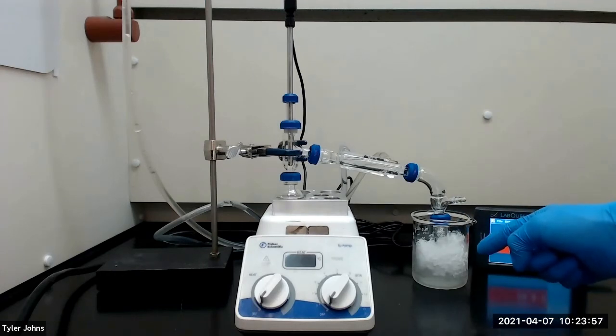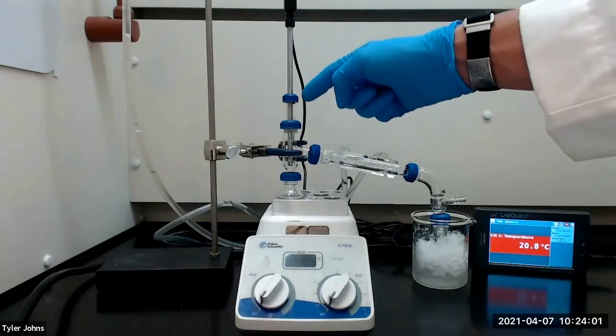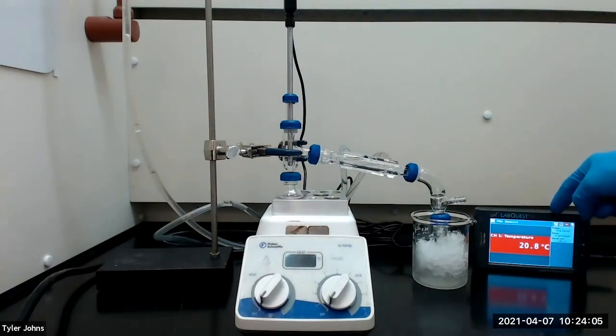I have immersed the pre-weighed conical vial in ice to ensure condensation. I've also connected a Vernier temperature probe inserted through a thermometer adapter to monitor the temperature throughout the distillation. We will continue the distillation until only one or two drops of liquid remain in the distilling flask.